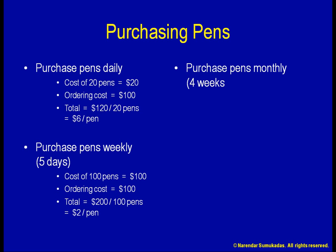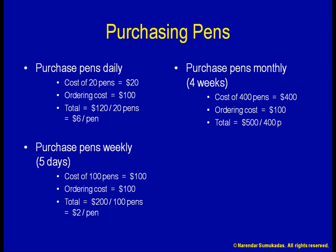If I buy the pens on a monthly basis, $400 for the pens plus $100 for the paperwork comes to $500 for 400 pens, or $1.25 per pen. My costs are reduced if I amortize the $100 ordering cost over a large order size, so I am inclined to order larger quantities less frequently. However, such an ordering pattern increases my cycle inventory.